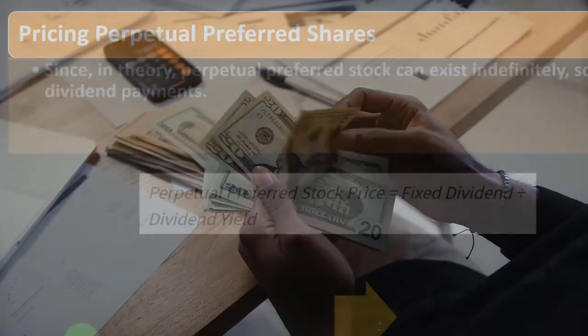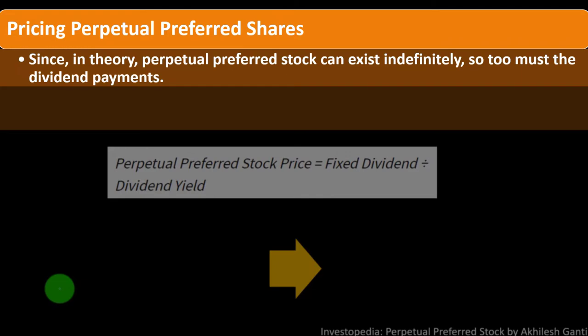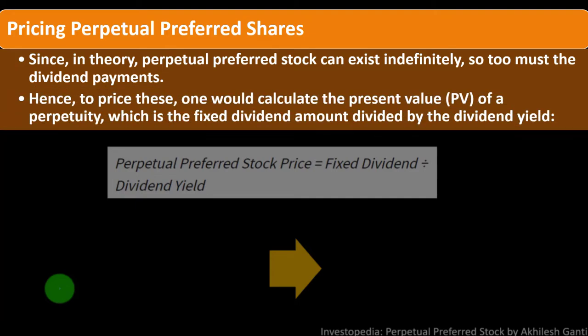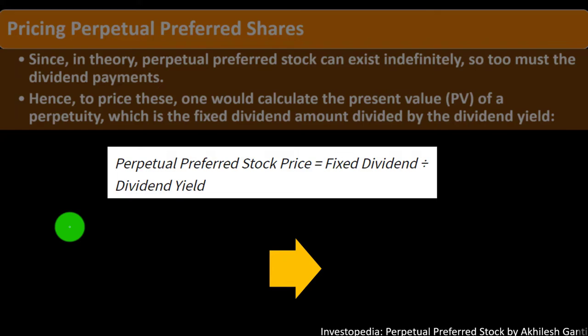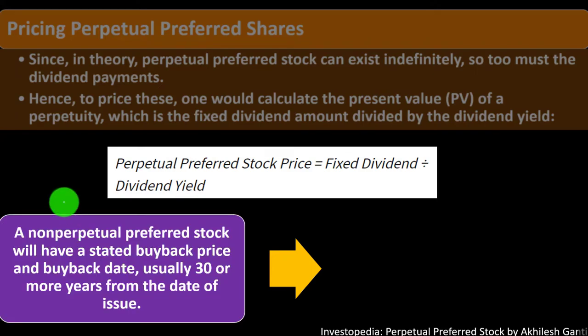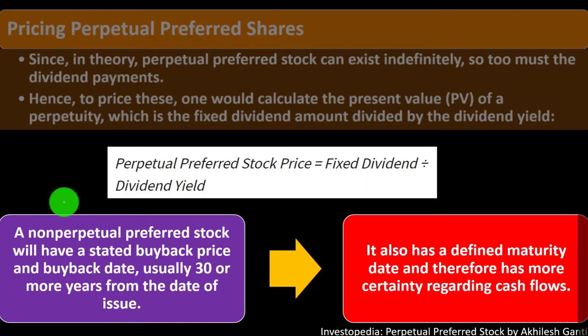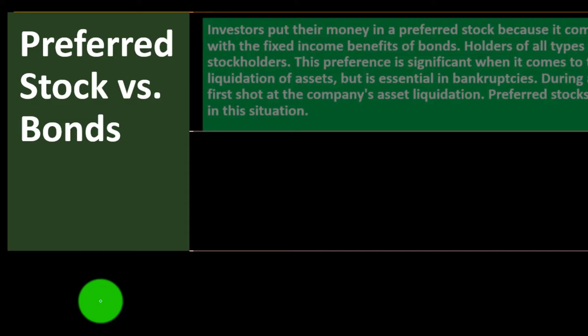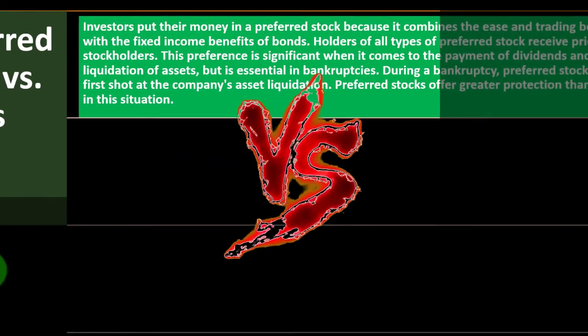Pricing perpetual preferred shares: since in theory perpetual preferred stock can exist indefinitely, so too must the dividend payments. To price these, one would calculate the present value of a perpetuity, which is the fixed dividend amount divided by the dividend yield. So the perpetual preferred stock price equals the fixed dividend divided by the dividend yield. A non-perpetual preferred stock will have a stated buyback price and buyback date, usually 30 or more years from the date of issue, and therefore has more certainty regarding cash flows.